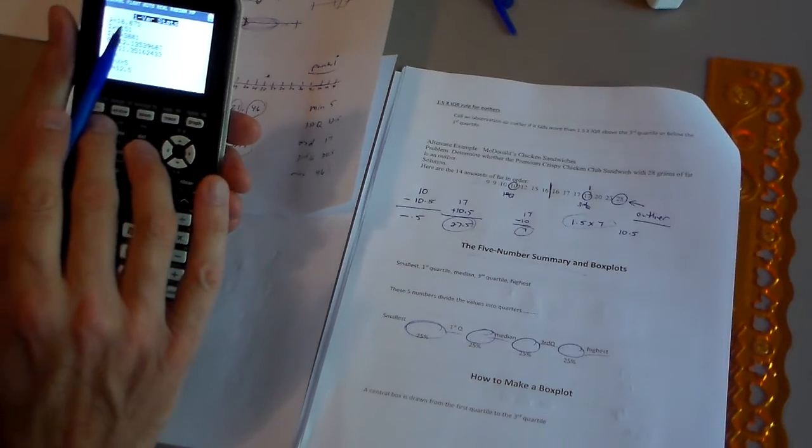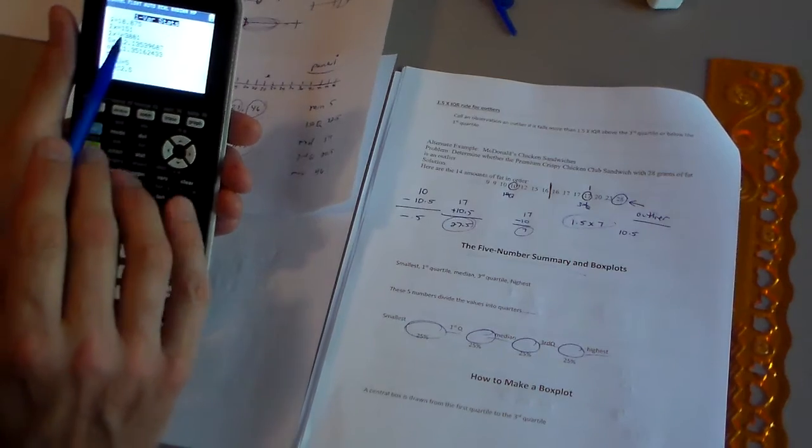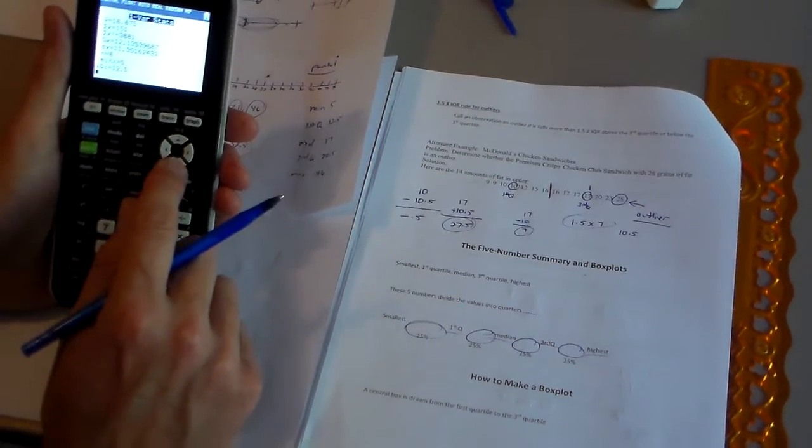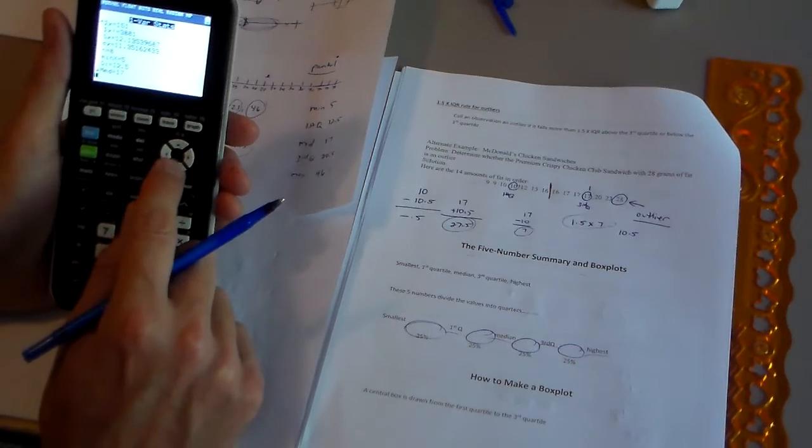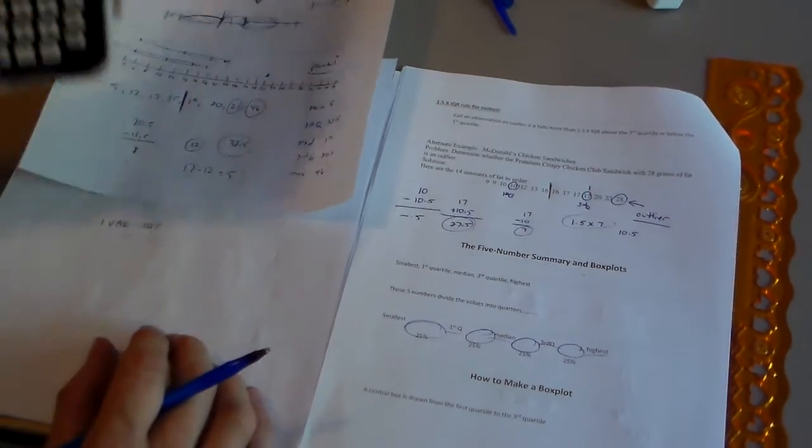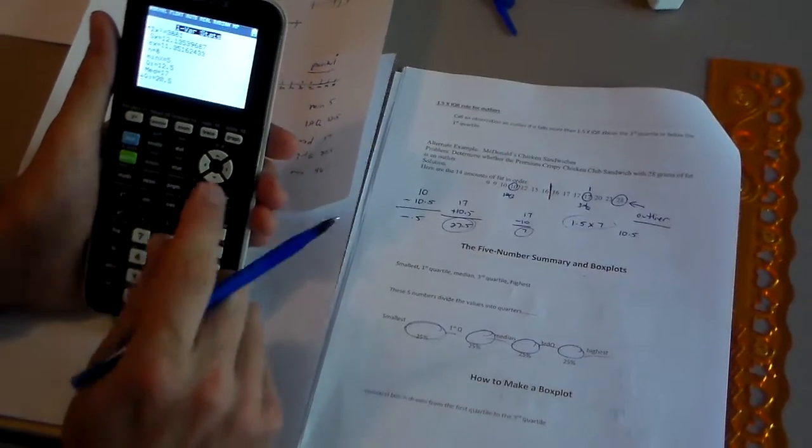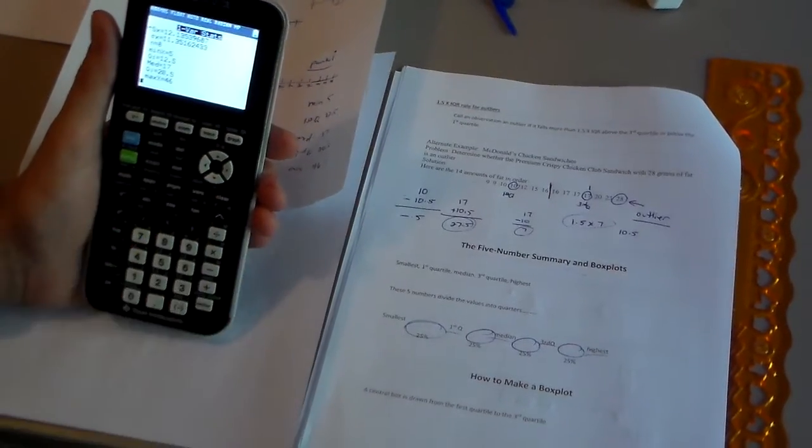So here's my mean, 18.875. We're going to talk about these things in a minute, but right now, there's my minimum value 5. There's my Q1, 12.5. My median was 17. All correct so far. 20.5 is my third quartile. My maximum value is 46.